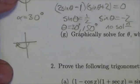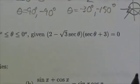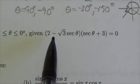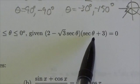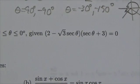Just in the bottom here. And the equation that we're solving is 2 minus root 3 secant plus 3 equals 0. But we're told to do this graphically, and that makes sense.